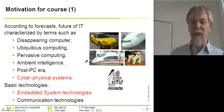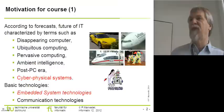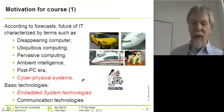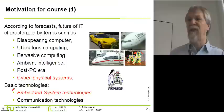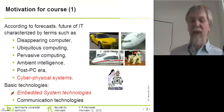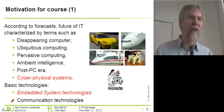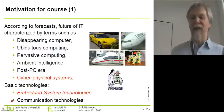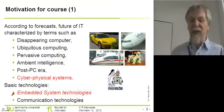In the case of robots, it is pretty obvious that we have an integration of information processing into the physical environment. From my point of view, there are two basic technologies needed for making this transition happen: embedded system technology and communication technologies. Communication technologies would be a subject by itself and I am not going into that — that would be a separate course. In my course, I am talking about embedded system technologies as they are needed for the design of cyber-physical systems.